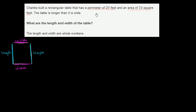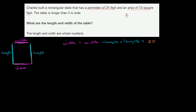Now they tell us that the perimeter is 20 feet, which is another way of saying that the width plus the length plus the width plus the length is equal to 20. And they tell us that the area is 24 square feet — that's another way of saying that the width times the length is going to be 24. So we could write that down: width times the length is going to be equal to 24.